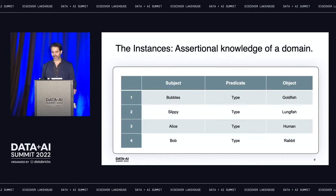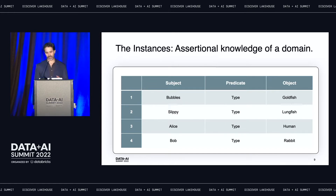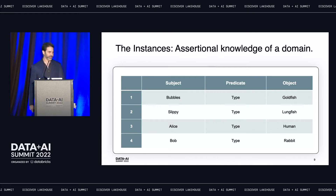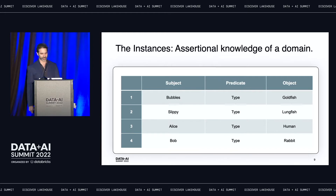Next, we have the instances—the assertional knowledge of our domain. You can think of this as the tables in your RDBMS. We have instances of our entities and connections. Here we've got a goldfish named Bubbles, a lungfish named Slippy, a human named Alice, and a rabbit named Bob. Very small database.